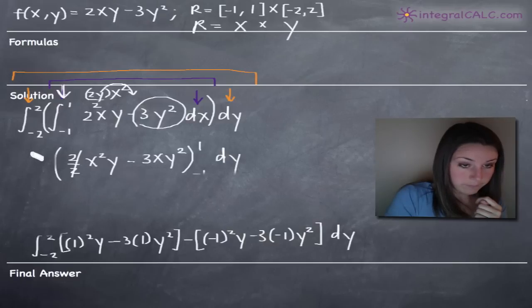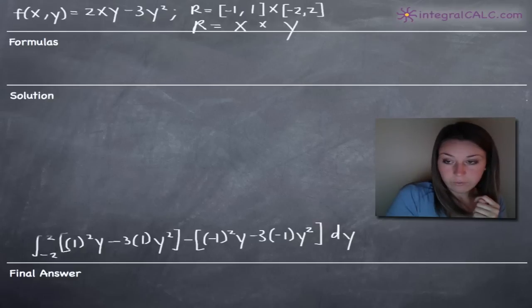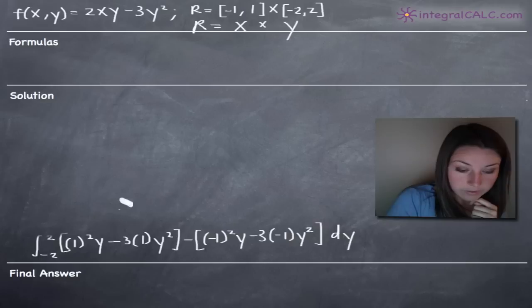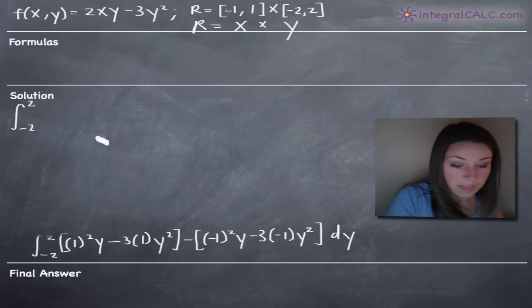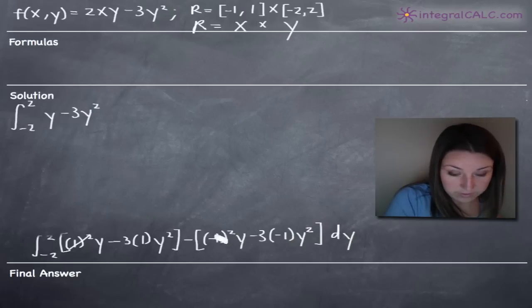We will now simplify what we've got inside here. We've got negative 2 to 2, and then this 1 squared is going to go away, so we can just say y. We've got minus 3y squared. This negative 1 squared is just going to become 1, so that'll be redundant, and we've got just minus y then.